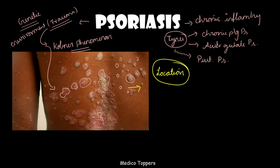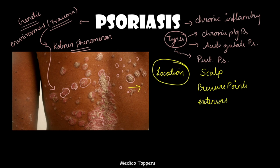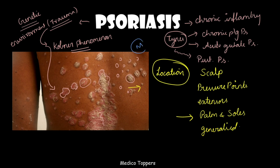Regarding the location of psoriasis: it is seen on the scalp and pressure points such as elbows — the Köbner phenomenon explains why pressure leads to injury and then psoriasis at those sites. It is located on extensor surfaces, which helps differentiate it from other conditions. We must examine the palms, soles, scalp, and genital area in all skin patients. Sometimes generalized lesions may be present in psoriasis.